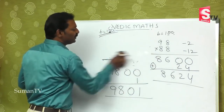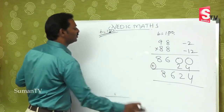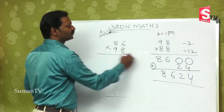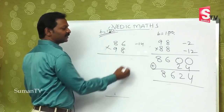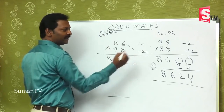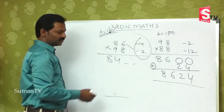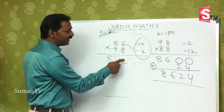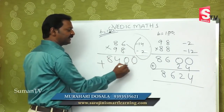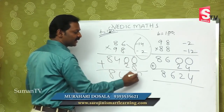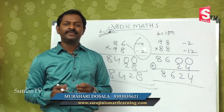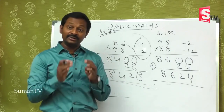Any number you can do. For example 86 multiplied by 98. 86 is less than 100 by 14, and 98 is less than 100 by 2. So 86 minus 2 is 84 — first part. There are 2 places. 14 times 2 is 28. Minus into minus is plus, so 28 is definite. The answer is 8428.